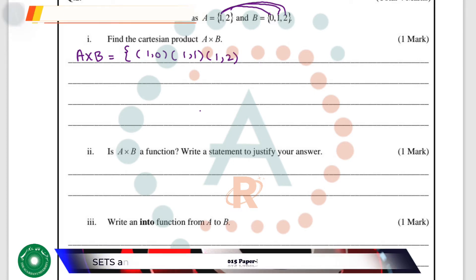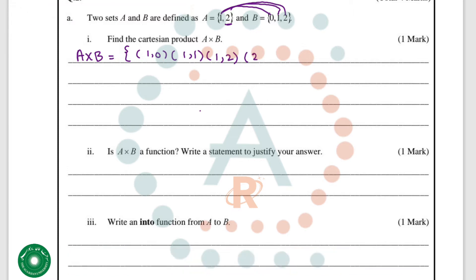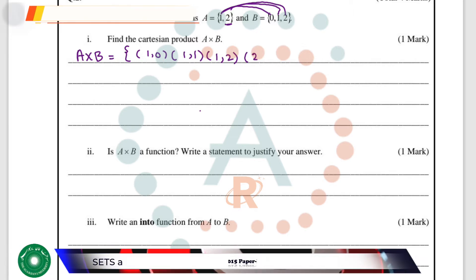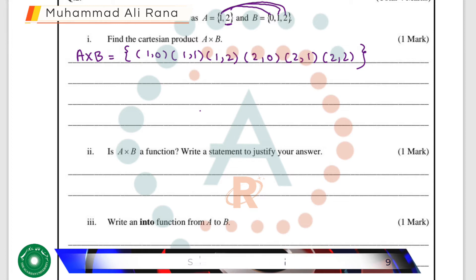Then we make the ordered pairs of the second element with each element in Set B. So the remaining elements in the Cartesian product will be (2,0), (2,1), and (2,2). So this is the Cartesian product from Set A to Set B.